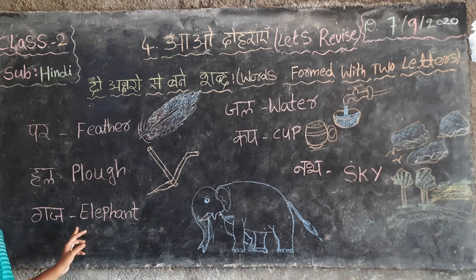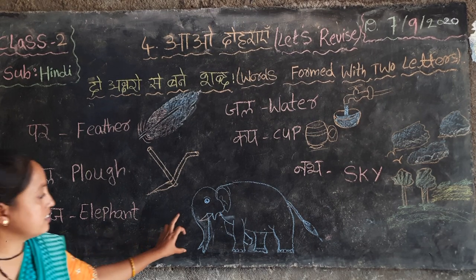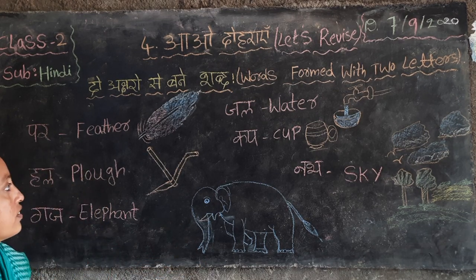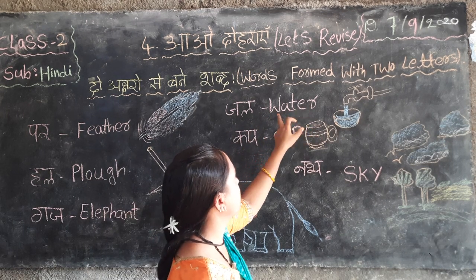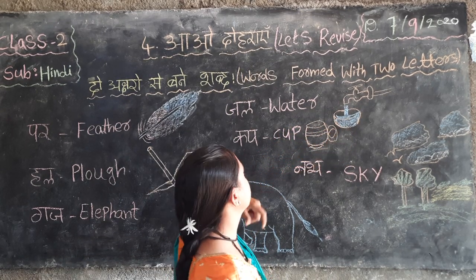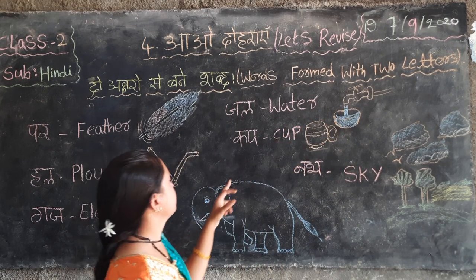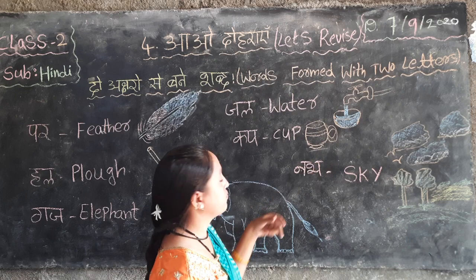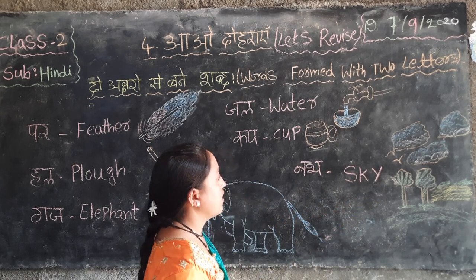Gaj — elephant, P-L-E-P-H-A-N-T, elephant. See this — e-n-u-g-u, elephant. Gel — water, W-A-T-E-R, water. Teacup. Nub — sky, S-K-Y. Akasham.